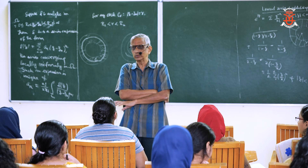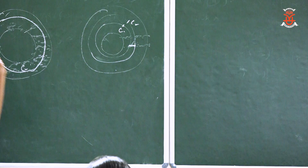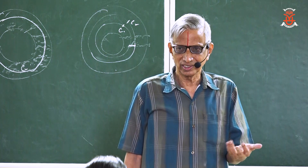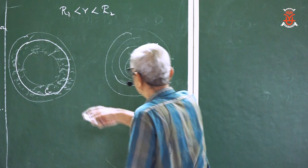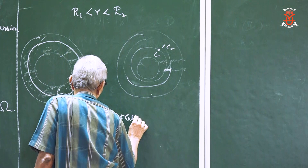Now we come to isolated singularities. The Laurent series expansion is valid in a punctured disk. The part of the series containing negative powers is called the principal part of the Laurent expansion. This part is important for classifying singularities.